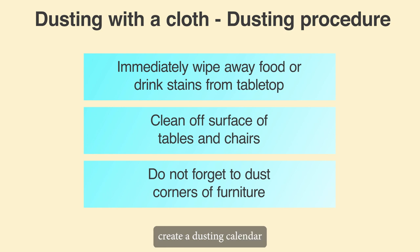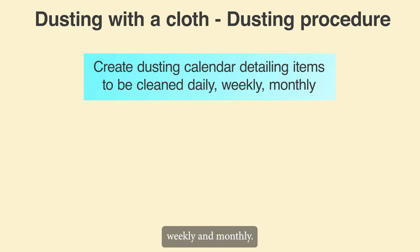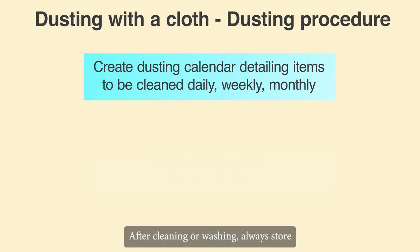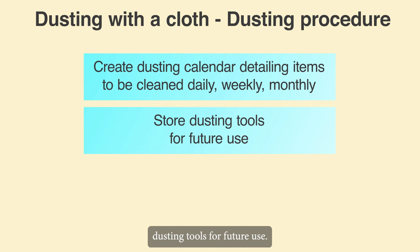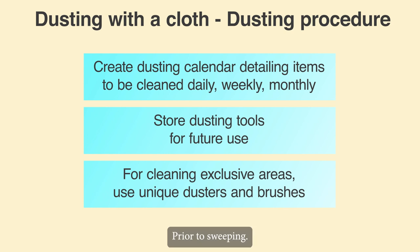To properly dust the house, create a dusting calendar detailing the items to be cleaned daily, weekly, and monthly for the caretaker. It streamlines and makes the entire process very systematic. After cleaning or washing, always store dusting tools for future use. When cleaning exclusive areas of the house, always use unique dusters and brushes.